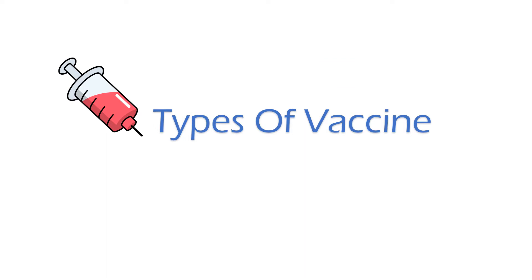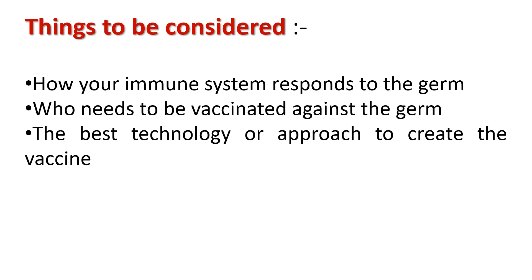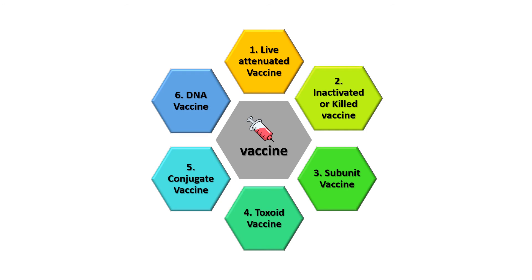Now come the types of vaccines. One kind of vaccine cannot fight all types of germs, so different types of vaccines are designed by scientists to teach the immune system how to fight off certain kinds of germs. When developing a vaccine, scientists consider how the immune system responds to the germ — whether the response will be very harsh, mild, or weak — who needs to be vaccinated against the germ, whether young children, adults, or the elderly, and the best technology or approach to create the vaccine.